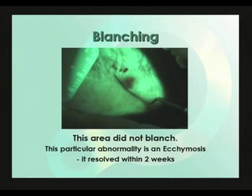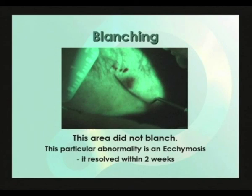It turned out that this particular abnormality was an ecchymosis, a type of soft tissue hemorrhage. When the patient showed up for the standard two-week follow-up visit, the situation had resolved and the dark areas were gone. It should not be surprising that we might have trouble blanching an ecchymosis — for a soft tissue hemorrhage there has been vessel damage and blood has spilled out into the surrounding connective tissue, making it more difficult to blanch because the blood is no longer inside the blood vessels. The dilated blood vessels that occur as a result of inflammation can easily be blanched because the blood is still inside the vessels.